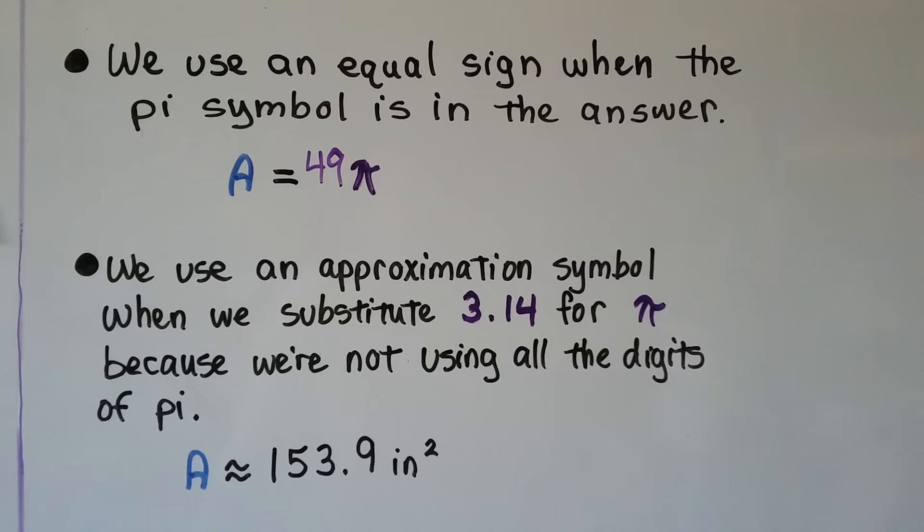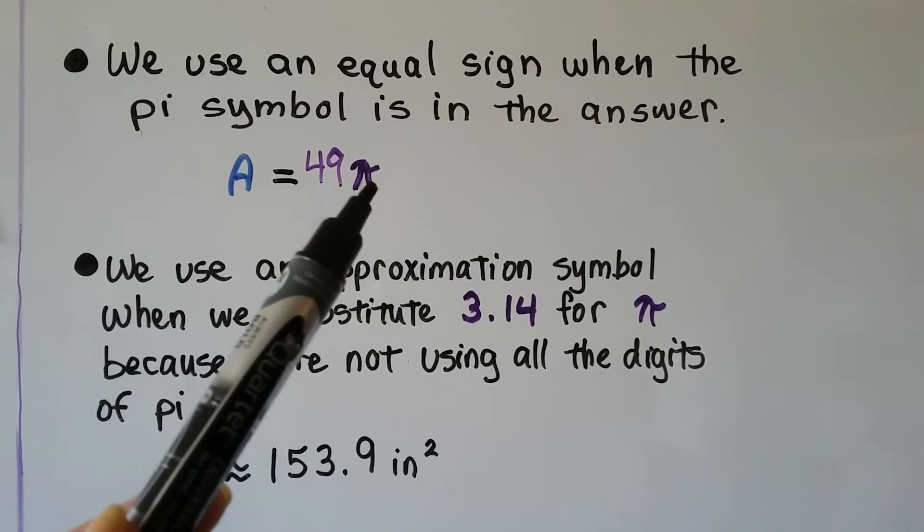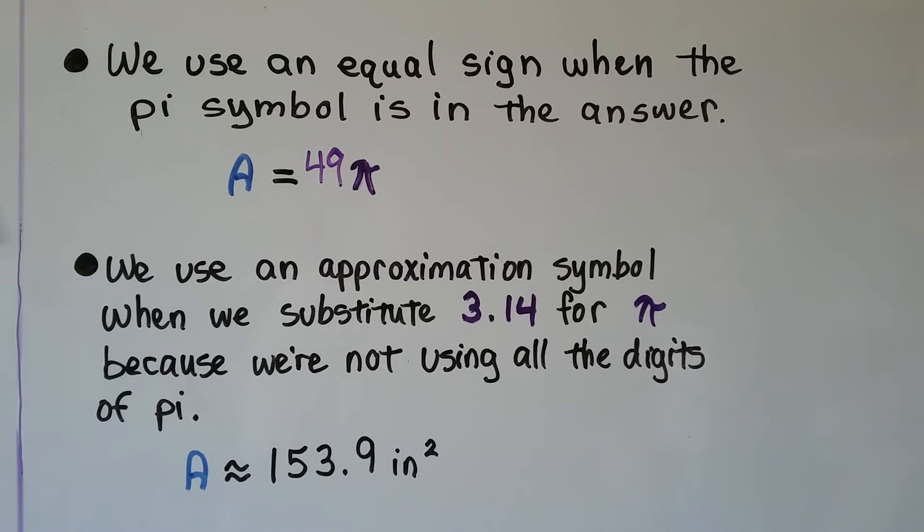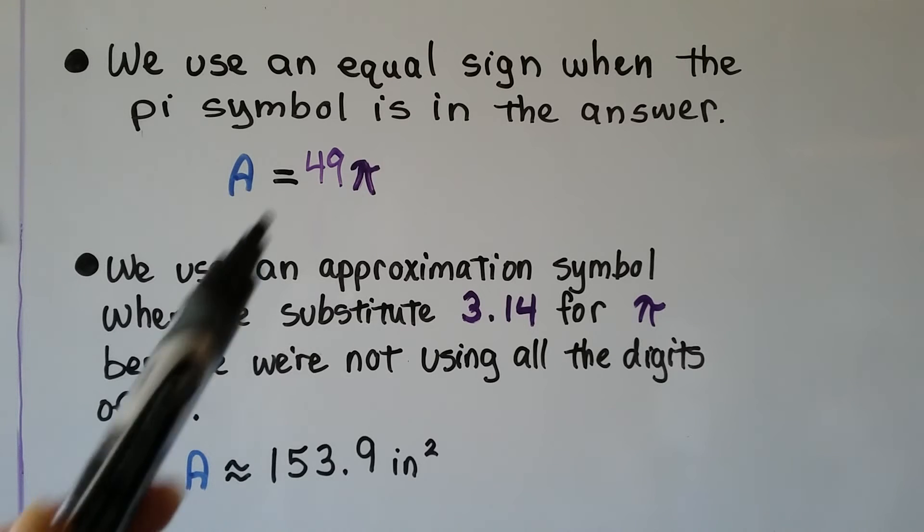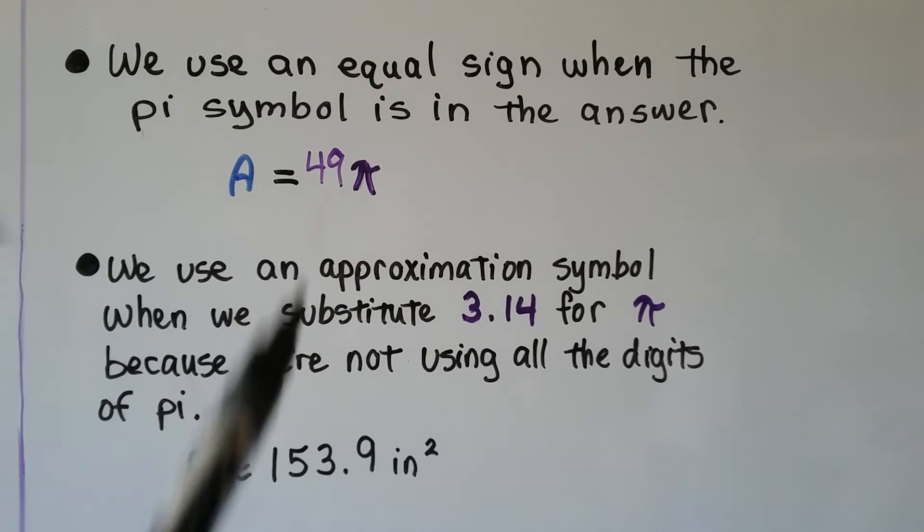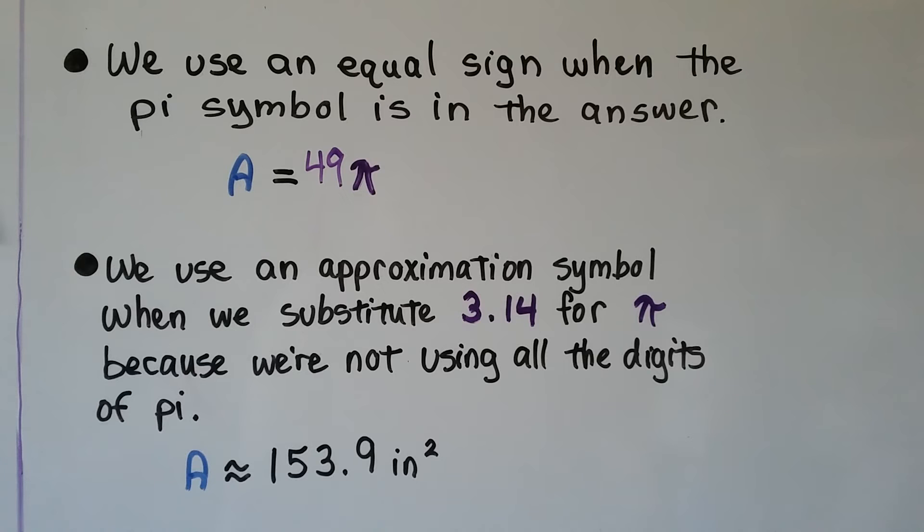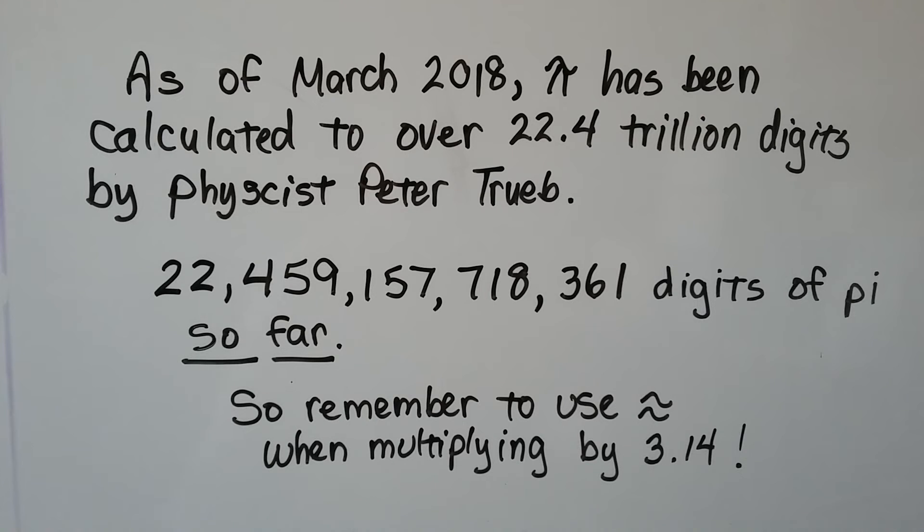Just as a reminder, we use an equal sign when the pi symbol is in the answer, because this symbol is representing all the digits of pi. We use an approximation symbol when we substitute 3.14 for pi because we're not using all the digits of pi. Instead of 49 pi, we would multiply 49 times 3.14 and get approximately 153.9 inches squared. As of March 2018, pi has been calculated to over 22.4 trillion digits by physicist Peter Troub. This is what 22.4 and more digits of pi, that's how many digits there would be. Remember to use the approximation symbol when multiplying by 3.14 because that's an approximation of pi.